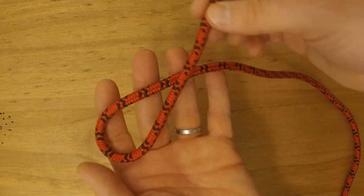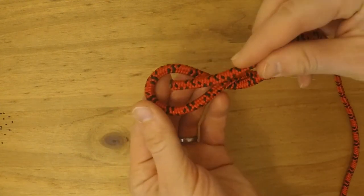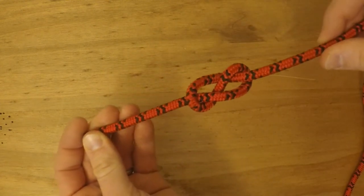Remember one more time you go over the standing end all the way under and then through the loop opening making a figure eight.